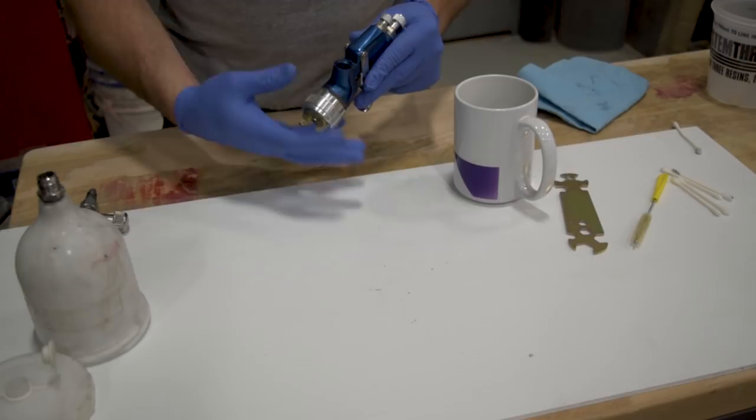Now I know that the paint runs into here. I want better access to that, so I'm gonna start by disassembling the rest of this.